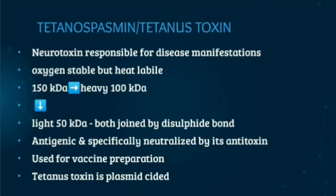The second virulence factor is tetanospasmin, or tetanus toxin. This tetanospasmin is a neurotoxin which is responsible for disease manifestations. The tetanus toxin is heat labile like tetanolysin, but the tetanus toxin is oxygen stable. This tetanus toxin is produced as a single 150 kDa polypeptide chain, which is then cleaved into two: a heavy 100 kDa chain and a light 50 kDa chain, joined by a disulfide bond.